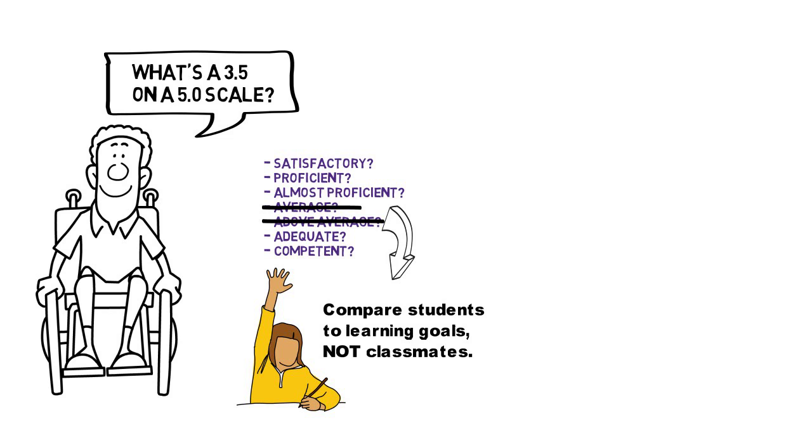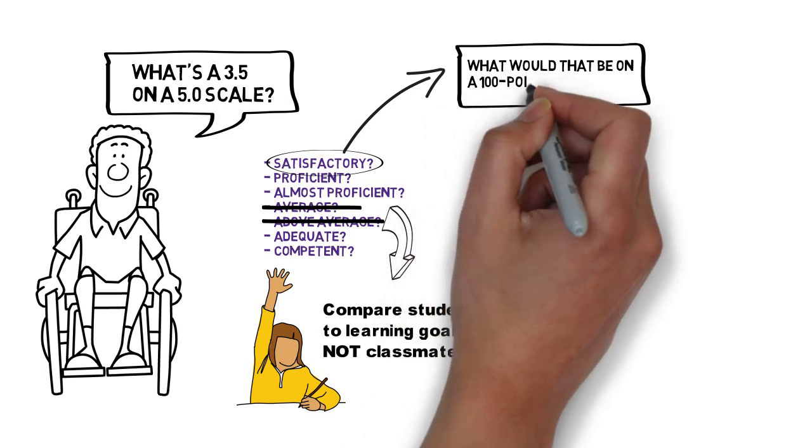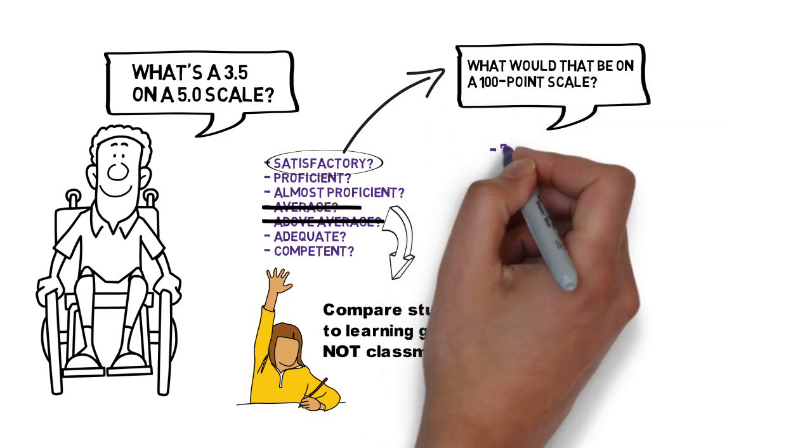To continue with this 3.5 and the 5.0 scale example, let's choose satisfactory. But this time, let's use a different scale, the 100-point scale or percentages. With percentages we describe satisfactory, what would it be for you? 70? 80? 90? 87?